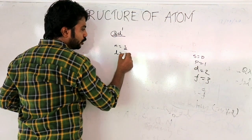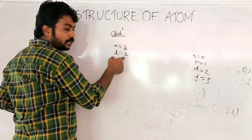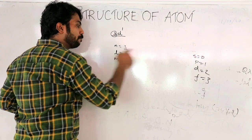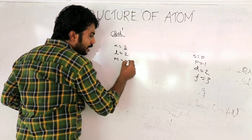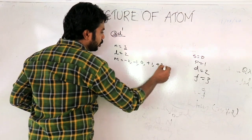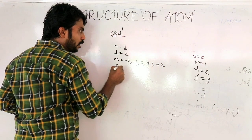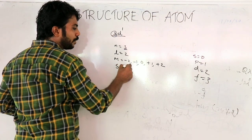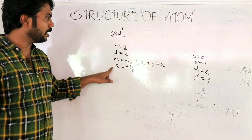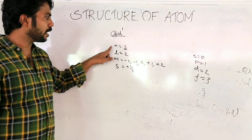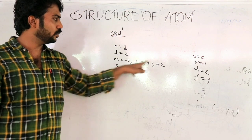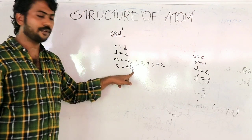So for 3d, L is equal to 2. The Magnetic number m runs from minus L to plus L, which gives minus 2, minus 1, 0, plus 1, plus 2. The Spin quantum number is equal to plus one half or minus one half. So for 3d: n equals 3, L equals 2, m equals minus 2 to plus 2, and S equals plus or minus one half.